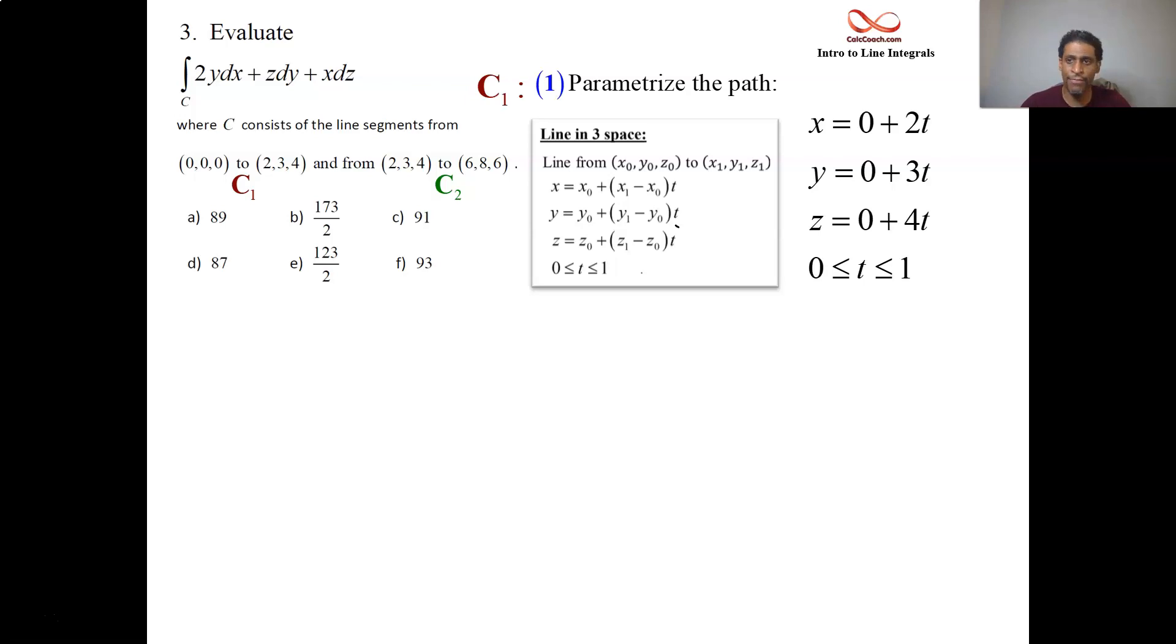t goes from 0 to 1, put these guys into a vector: 2t, 3t, 4t, and we're ready for step 2. Take the derivative of the path, so it's going to be (2,3,4) dt, 2 in the i component, 3 in the j component, 4 in the k component. Step 3.